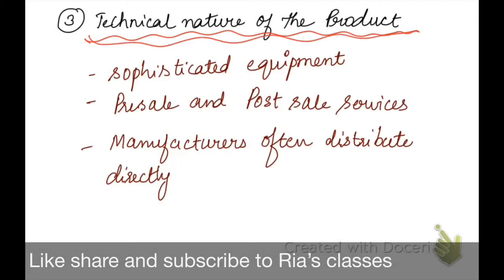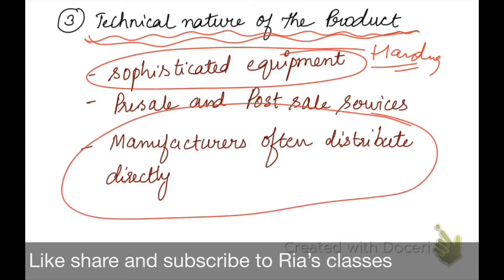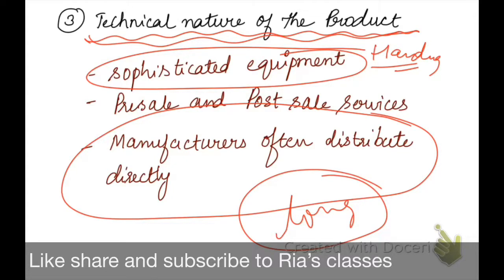The next product-related aspect is the technical nature of the product — that is, whether our product is sophisticated. If our equipment is very sophisticated, then these products are very expensive and the handling is very difficult and requires great care. So generally, these products are directly distributed by manufacturers, because the product is sophisticated and expensive — manufacturers prefer direct sales with no retailer or wholesaler. But if we talk about simple mechanical products like electronic toys or clocks, we can use long channels for them. For more sophisticated products, we prefer short channels.